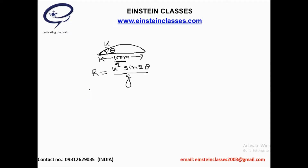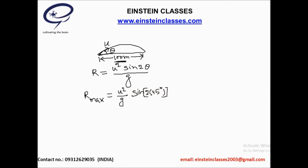The range will be maximum when theta equals 45 degrees. That means the maximum range will be equal to u squared divided by g, since sine 2 theta equals 1 — because sine of 2 times 45 degrees equals sine 90 degrees equals 1. So the range comes out to u squared by g, and this is the maximum range, which according to the given problem equals 100.